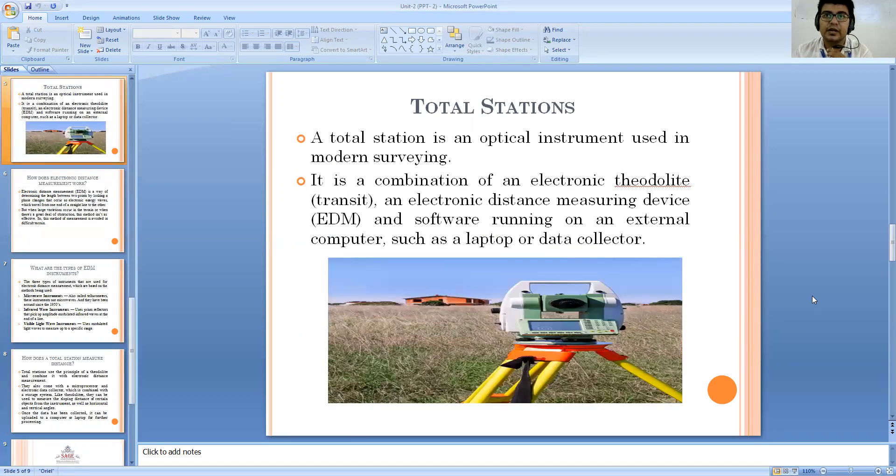Now have a look at the total station device. It comprises of various components used for modern surveying work. It is a combination of the electronic theodolite as well as the electronic distance measuring device attached with it, and that too runs with the help of software which helps externally in the form of computer, laptop, or data collector device. So we can gather all the data we have collected in the entire day and then manipulation can be done very easily.